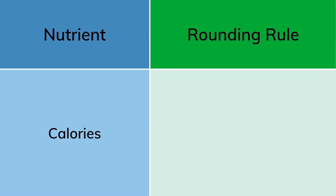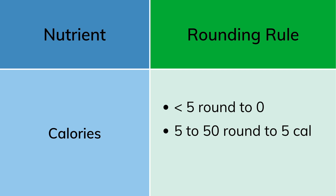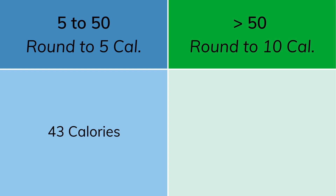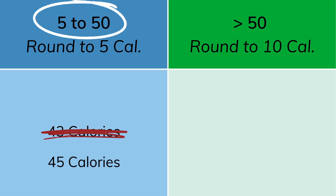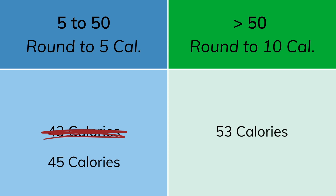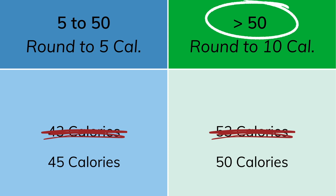Let's start with calories as an example. If a product had less than five calories, you'd round it down to zero. A product with between five and 50 calories would be rounded to the nearest five calories, and a product with over 50 calories would be rounded to the nearest 10 calories. So here's what that looks like in practice: a product with 43 calories would be rounded up to 45 calories — it falls in the range between 5 and 50, so we're rounding to the nearest five. However, a product with 53 calories would be rounded down to 50 calories, since it's greater than 50 and we're rounding to the nearest 10.